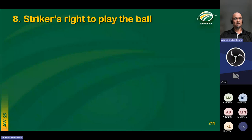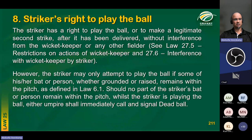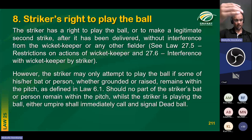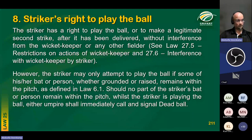The striker has a right to play the ball or at any time to make a legitimate second strike in defence of their wicket, without interference from the wicket keeper or any other fielder. The law also added — fairly recently — that when playing at the ball, the striker must have some part of the bat or person, whether grounded or raised, within the pitch. If there is no part of the striker's bat or person remaining within the pitch and the striker goes totally off the pitch to play at the ball, the umpire must immediately call and signal dead ball.